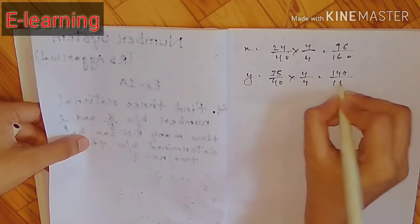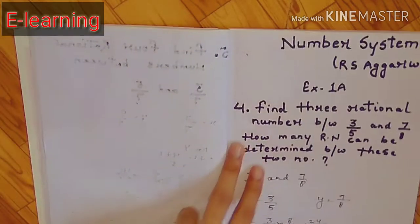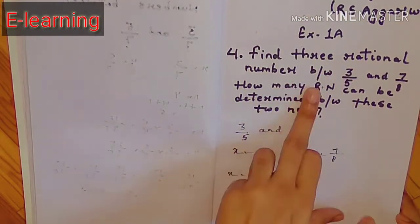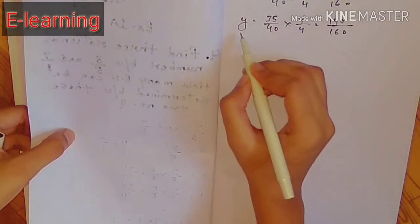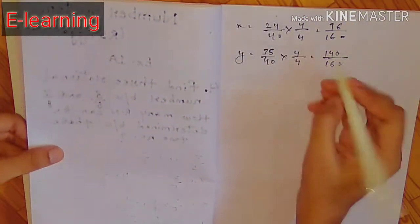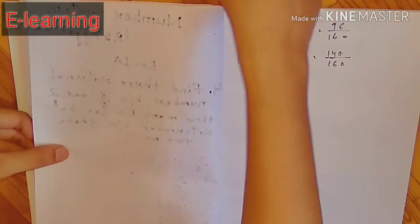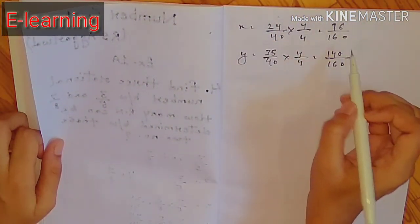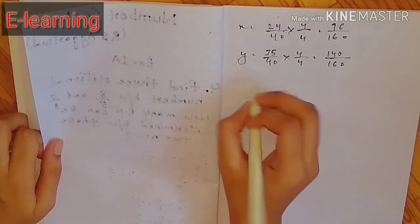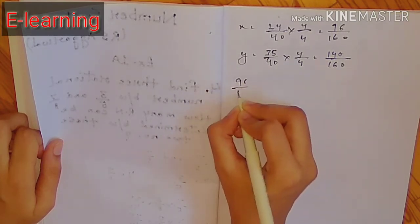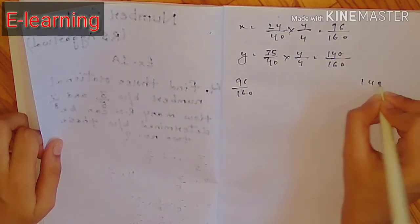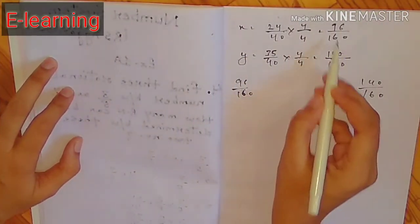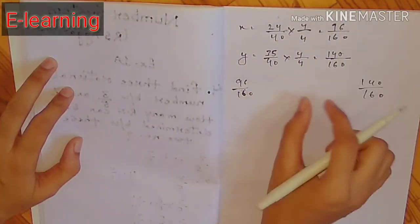अब देखिए इसमें क्या find करना है — 3 rational numbers find करने हैं इन दोनों x और y के बीच में। इन दोनों की बीच में बहुत ज़्यादा gap है — 96/160 और 140/160 के बीच — तो हम कुछ भी ले सकते हैं।